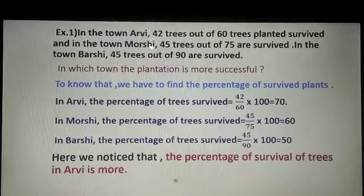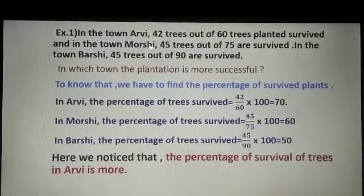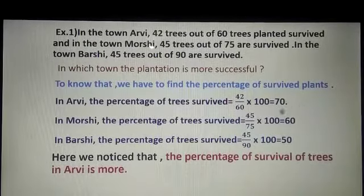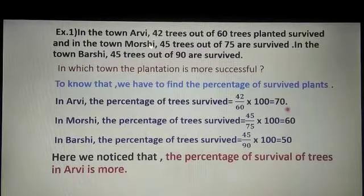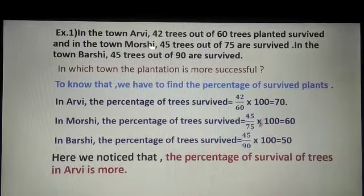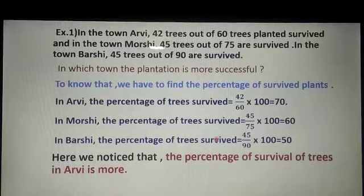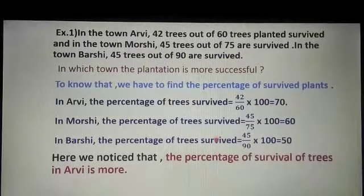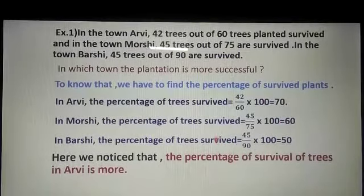From this, we notice the percentage of survival of trees in R.V. is the highest at 70%, so the most successful plantation is in R.V. This example we will now see in the form of a graph.